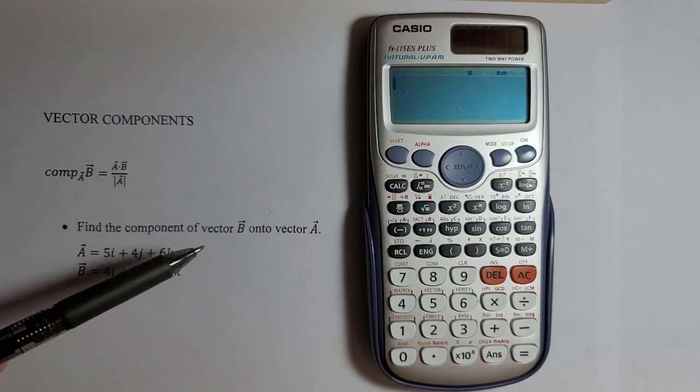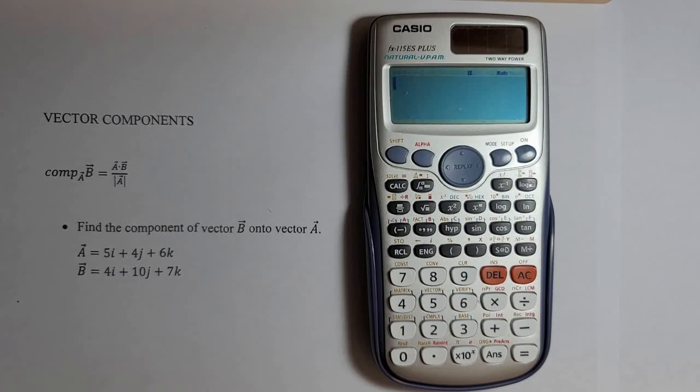Here is the example. Find the component of vector B onto vector A. Vector A equals 5i plus 4j plus 6k and vector B equals 4i plus 10j plus 7k.